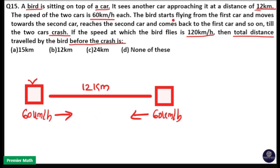The bird starts flying from the first car and moves towards the second car, reaches it, and comes back to the first car, then goes to the second car again, then back to the first car, and so on till the two cars collide.